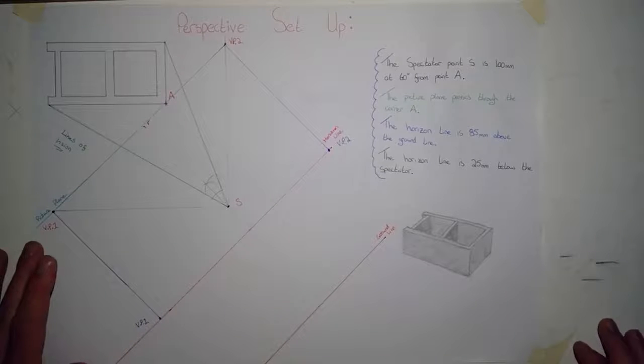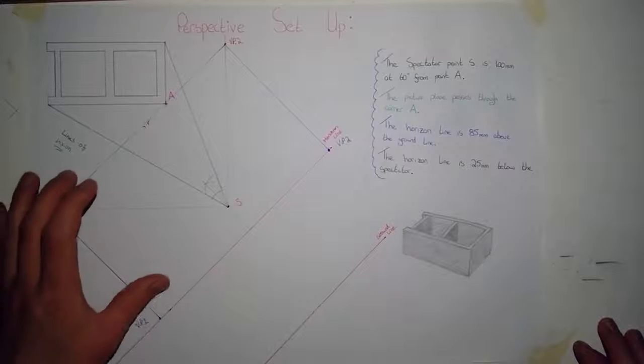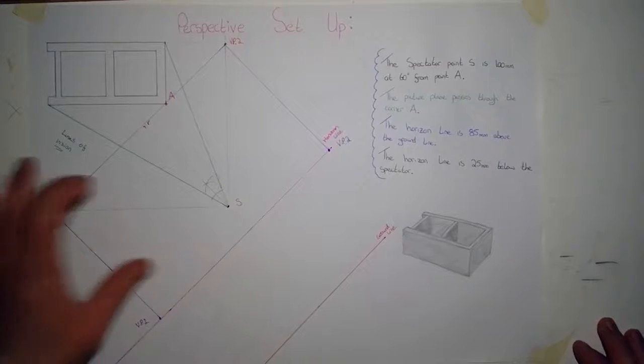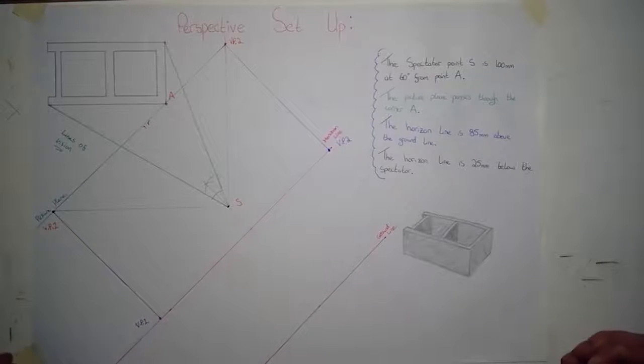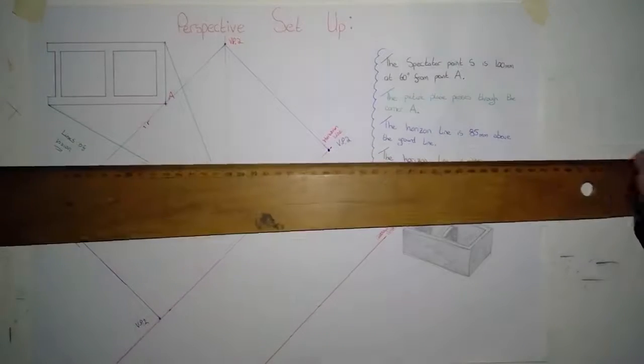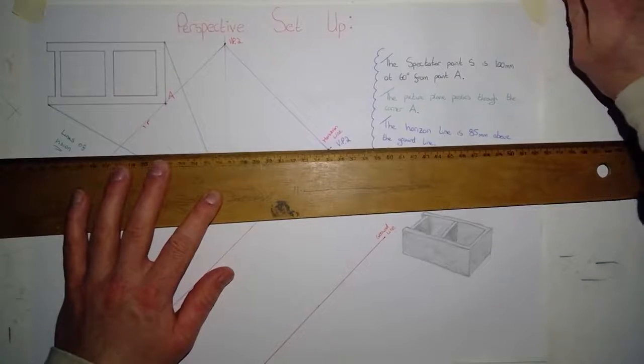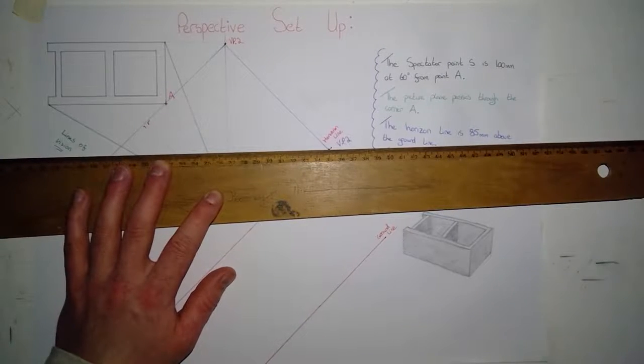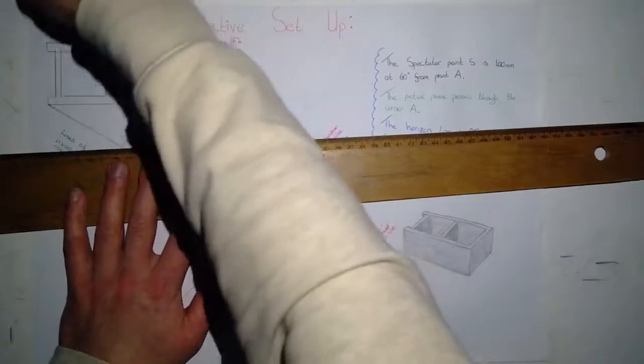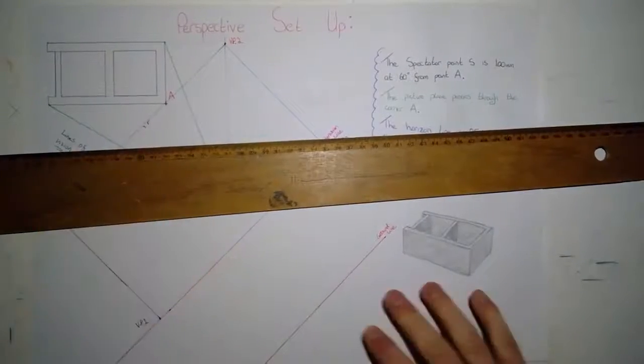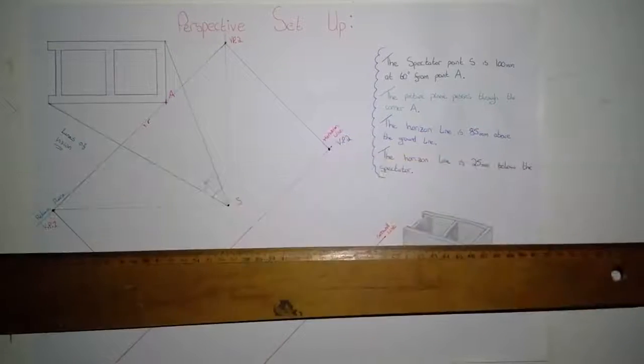When I'm doing these perspective questions, the first thing I do after I have the setup done is change the orientation of the sheet. I tape half the sheet, and instead of lining the bottom of the sheet up with the t-square like we normally would, I'm going to line the picture plane, horizon line, or ground line up with the t-square.